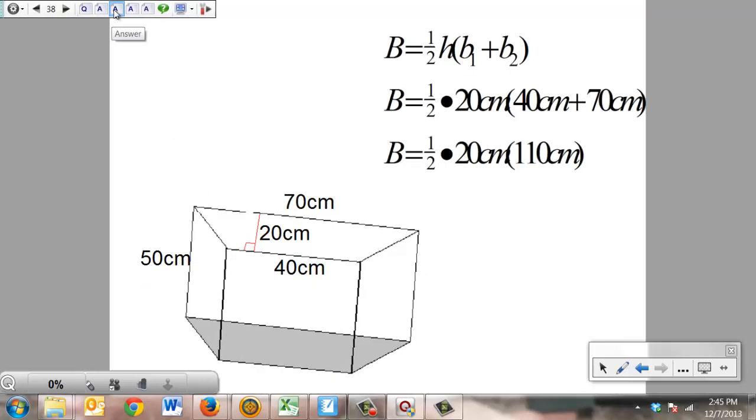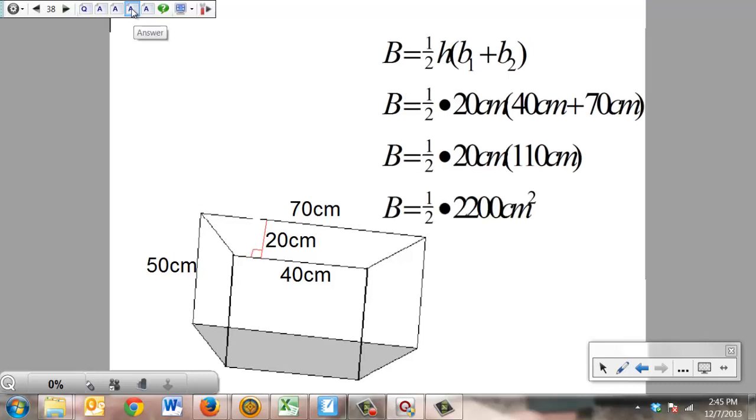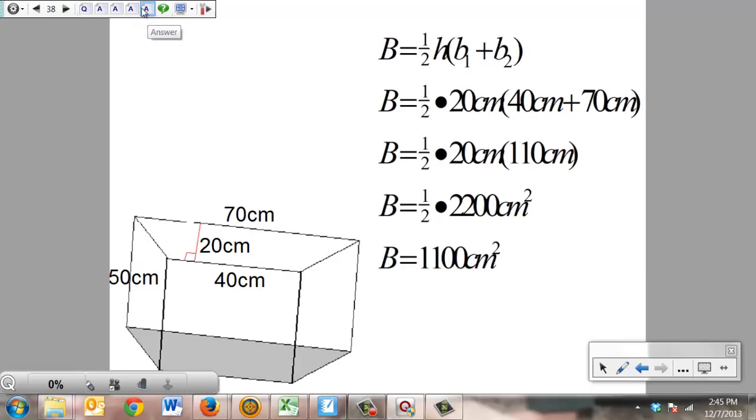So we're going to take and plug those values in, which you can see right here. I just moved the polyhedron down out of the way. From there, we're going to take and add the 40 and 70 together. Then we had choices on how to proceed. I chose to take and multiply the 20 times the 110 first and then half that. You may have found half of 20 and then multiplied it by the 110. Either way, we should have come up with the same exact base area of 1,100 centimeters squared.